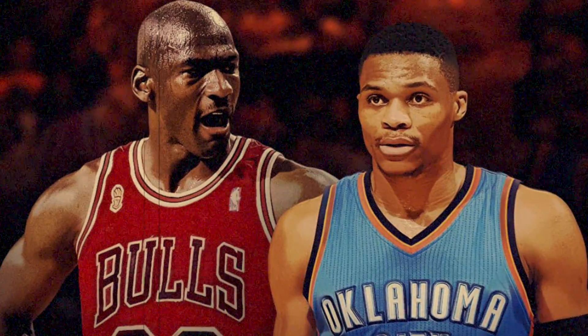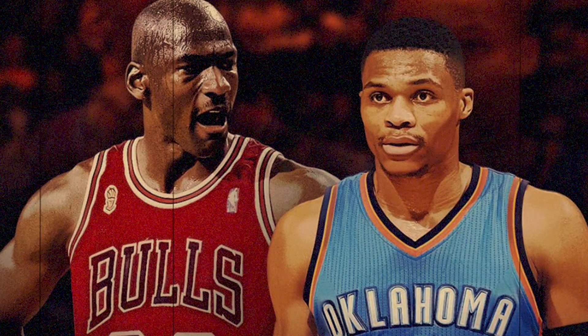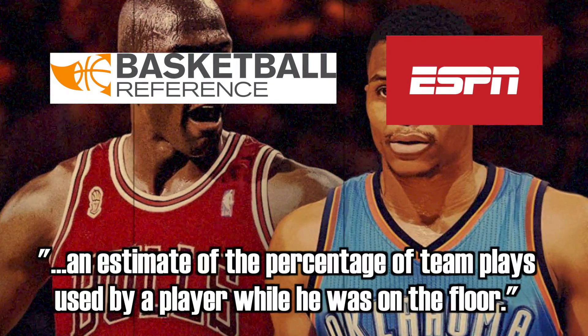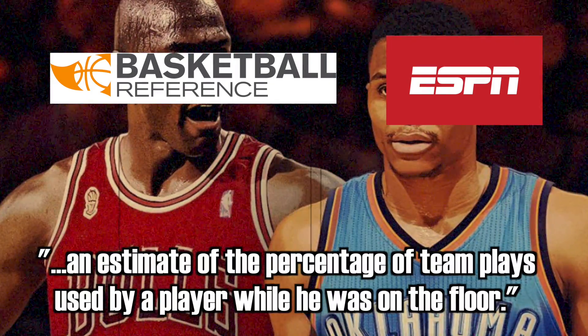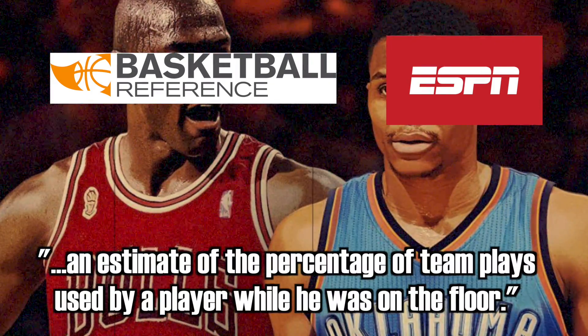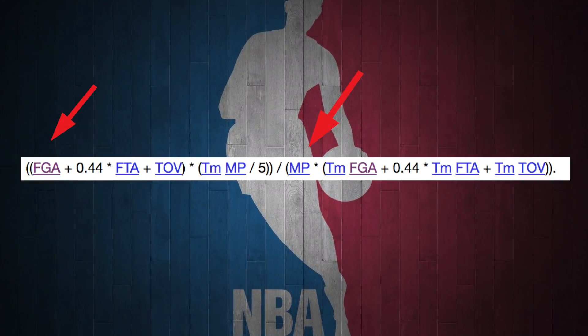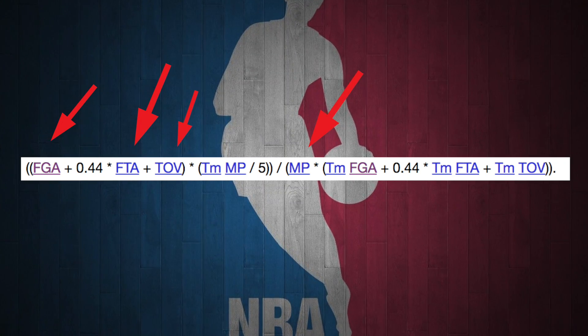The first step here would be to clarify which version of usage rate we're talking about. The one that most people are familiar with is the one defined in the glossary of basketball-reference.com as well as ESPN.com, which is an estimate of the percentage of team plays used by a player while he was on the floor. The formula for usage rate is surprisingly simple — it takes into account an individual's minutes, field goal attempts, free throw attempts, and turnovers, and compares those categories to the entire team's.